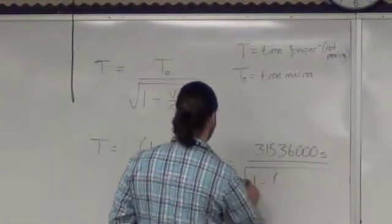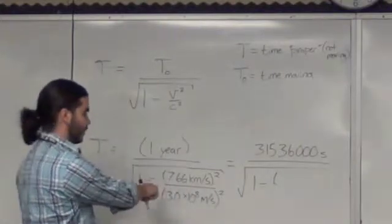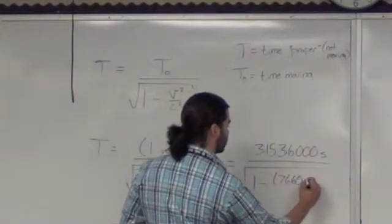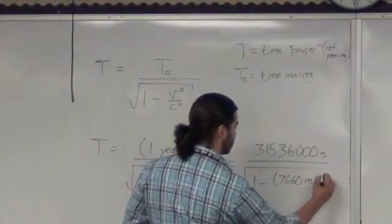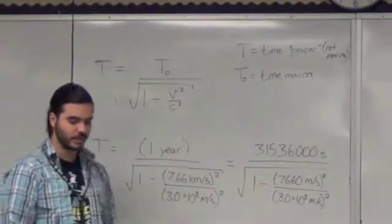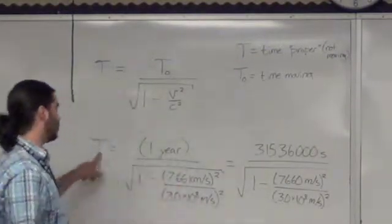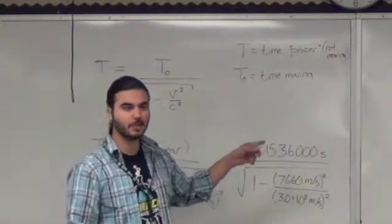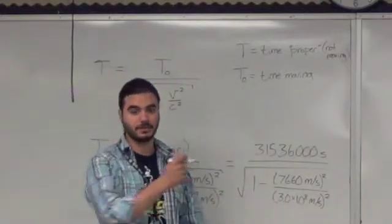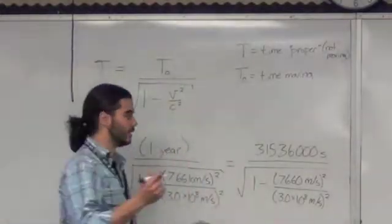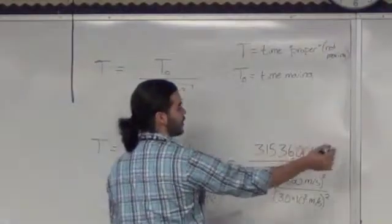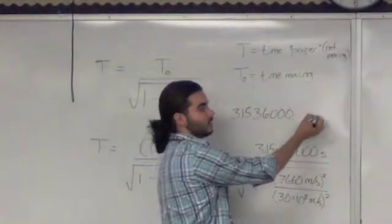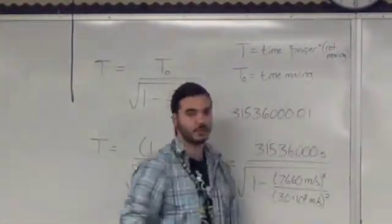If you figure out how many seconds there are in one year, you should get there are 3.15 times 10 to the 7th seconds in a year. Divided by 1 minus, we need this in meters per second rather than kilometers per second. So that's just going to be 7,660 meters per second. If you plug that all into your calculator correctly, you would expect to see that time proper would be an extra 3 milliseconds, is what they said, right? But you don't actually get an extra 3 milliseconds if you do that calculation in your calculator. If you do it in your calculator, you'll get that rather than this plus 3 milliseconds, you get 0.2. We're expecting to see 0.03, right? You actually get 0.1.